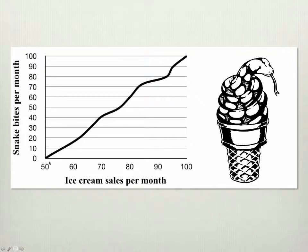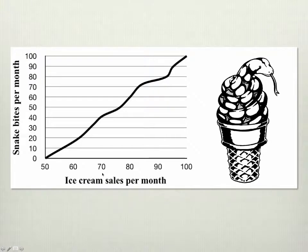Is it negative or positive? It's positive because they're going in the same direction. The next question is: do ice cream sales cause snake bites? Does going and buying an ice cream make you more likely to be bitten by a snake? Does it cause the snake to come over and bite you? And the answer here is obviously no. That's why I've made it a ridiculous example — to make it very clear that that is not the case.